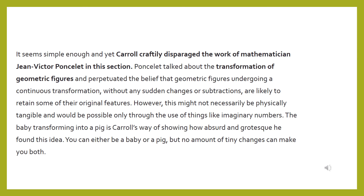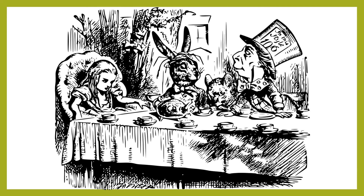It seems simple enough, and yet Carroll craftily disparaged the work of mathematician Jean-Victor Poncelet in this section. Poncelet talked about the transformation of geometric figures and perpetuated the belief that geometric figures undergoing a continuous transformation without any sudden changes or subtractions are likely to retain some of their original features. However, this might not be physically tangible and would be possible only through the use of imaginary numbers. The baby transforming into a pig is Carroll's way of showing how absurd he found this idea — you can either be a baby or a pig, but no amount of tiny changes can make you both.